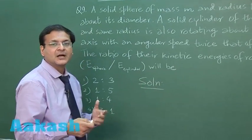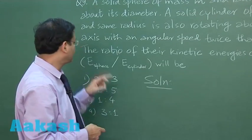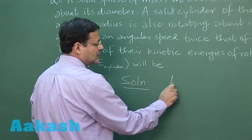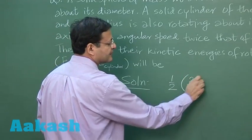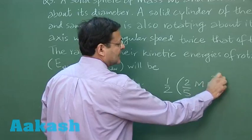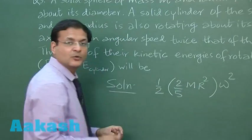Now see, in this ratio, kinetic energy is half I omega square. So first you have to take for a sphere - what is the moment of inertia for a sphere? This will be 2 by 5 mr square, and then I am taking this rotation speed omega, omega square.